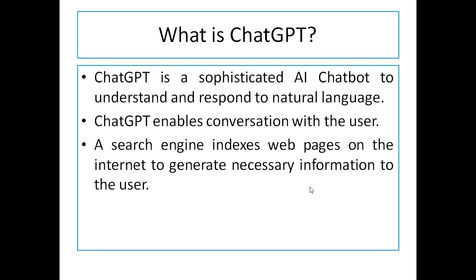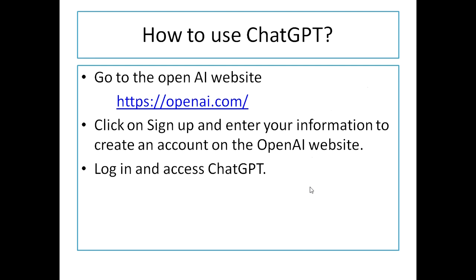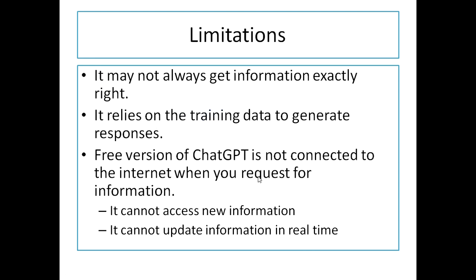To use ChatGPT, first go to the website https://openai.com. There is a sign-up option — click on it and you will be asked to enter your information. You need a valid phone number, which should be validated by entering a code. Once your information is validated, your account will be created successfully and you can use your login information to access the OpenAI portal and ChatGPT.